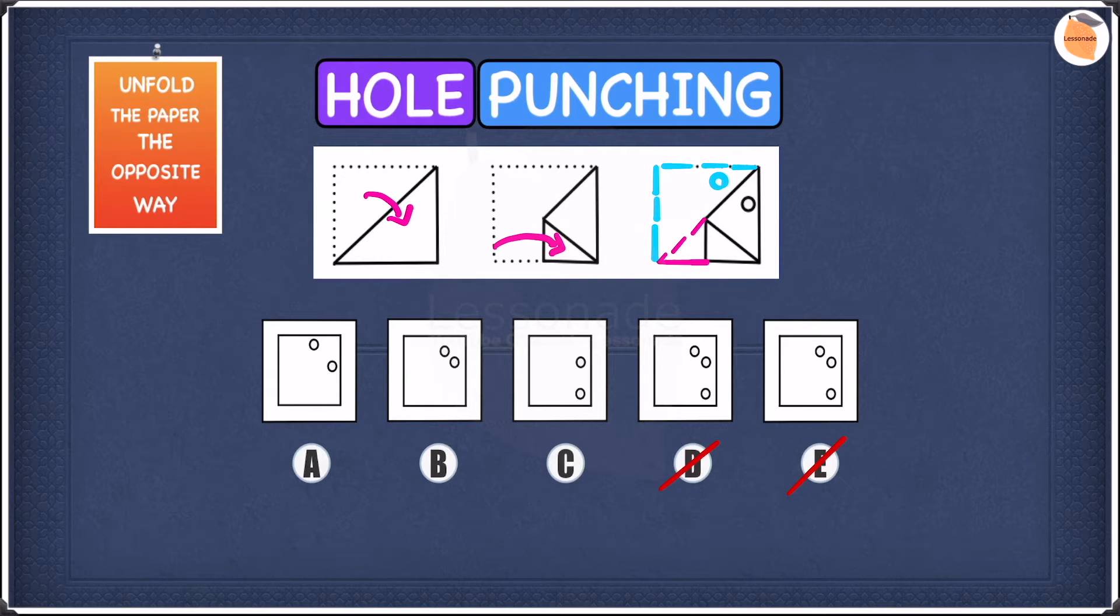We can also cross off C. In C, there's a hole next to the bottom right corner, even though in the actual answer, there is no hole to the bottom right corner. So therefore, we can also cross off C and we're now left at A and B.